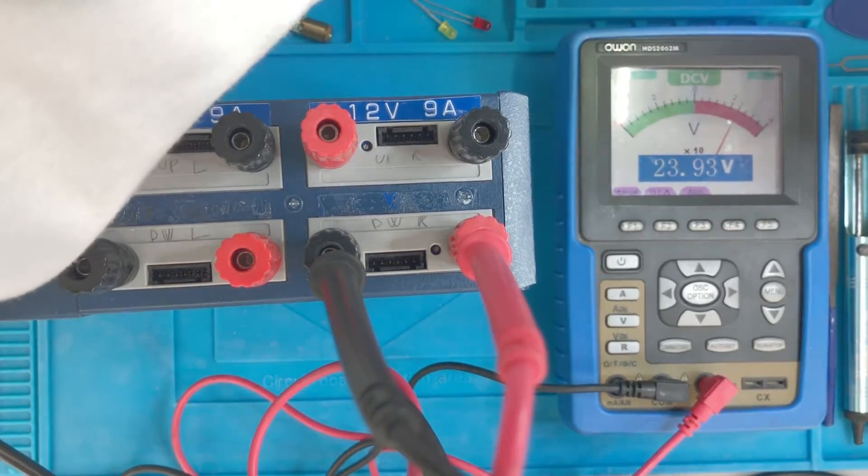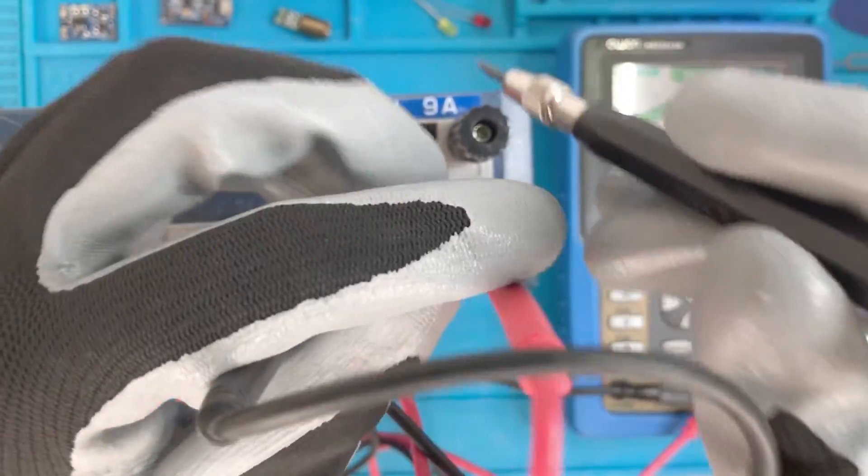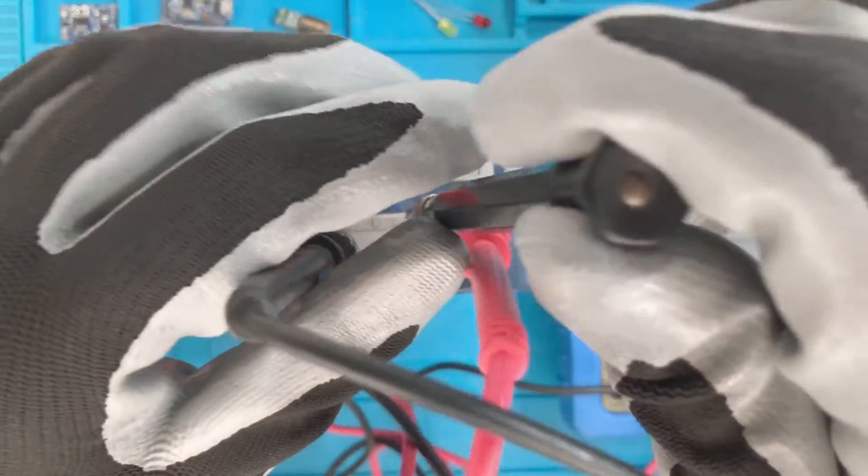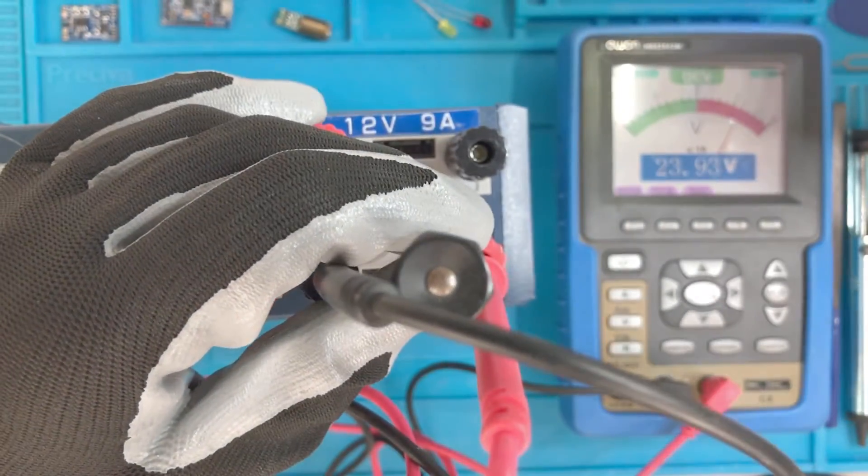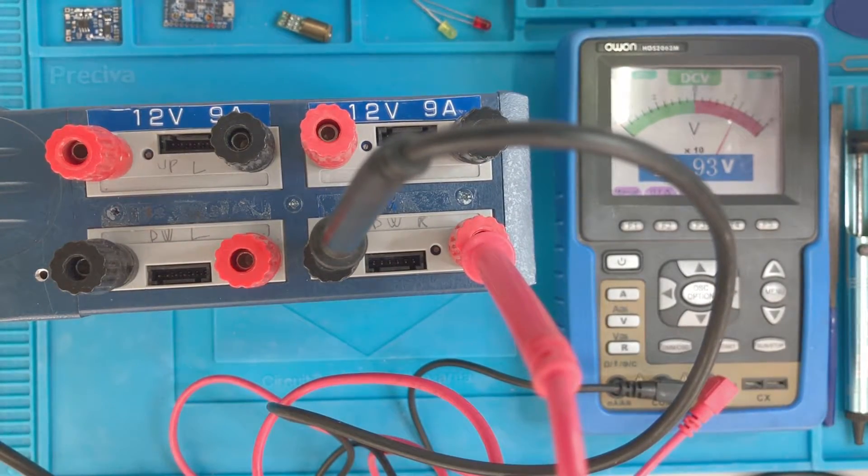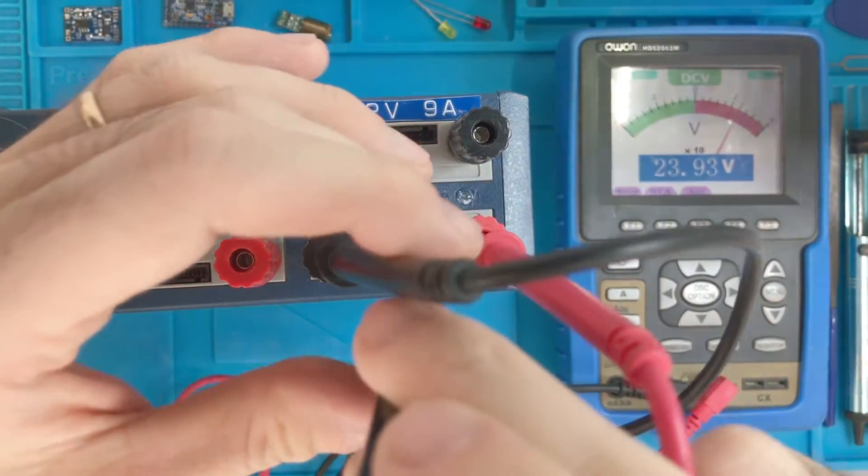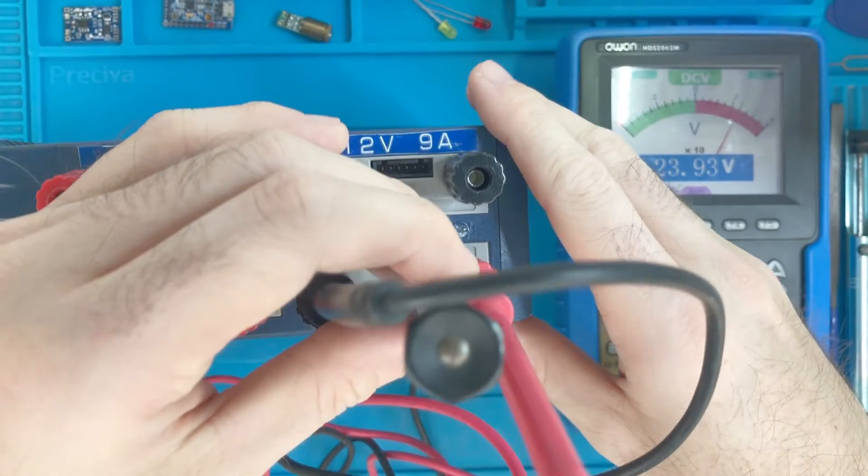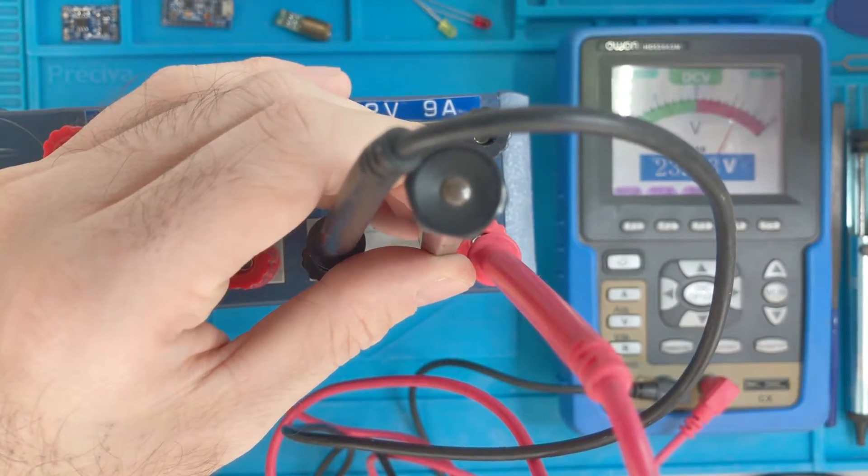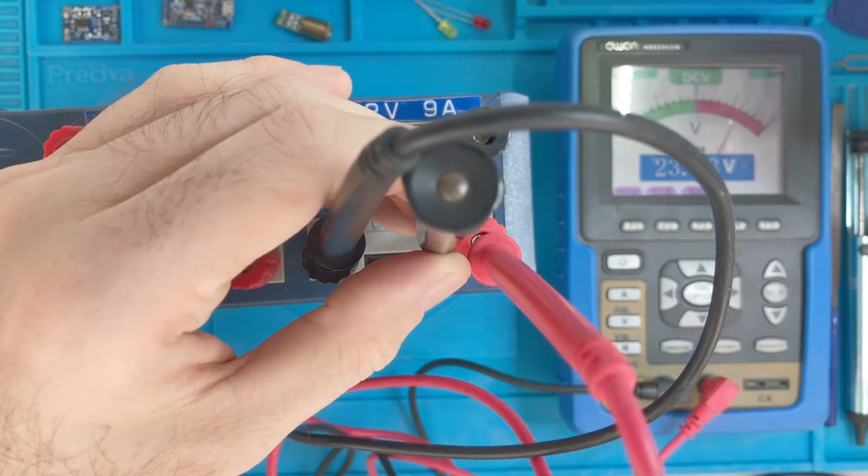So we can trim it a little bit. Let's see if we can adjust it to a better value. There is this trimming screw. Okay, now I remove my gloves. I'm quite confident that it will not explode. Let's see if we can adjust it.